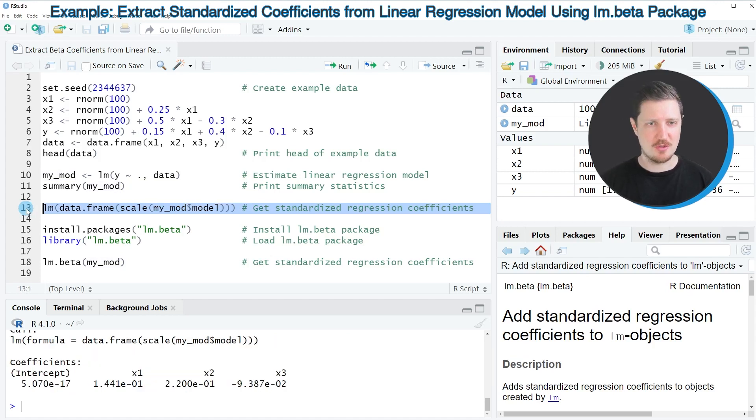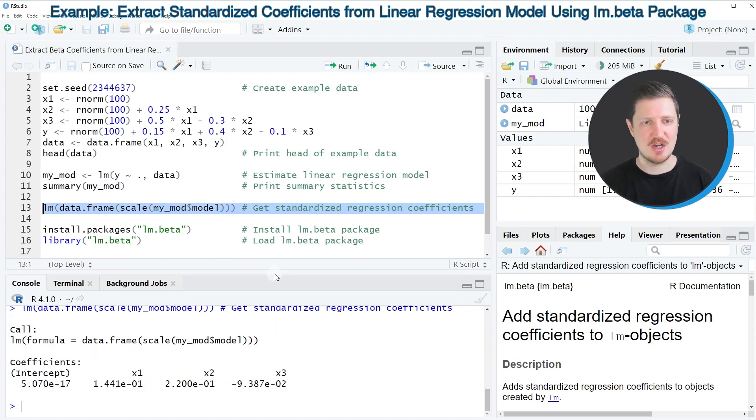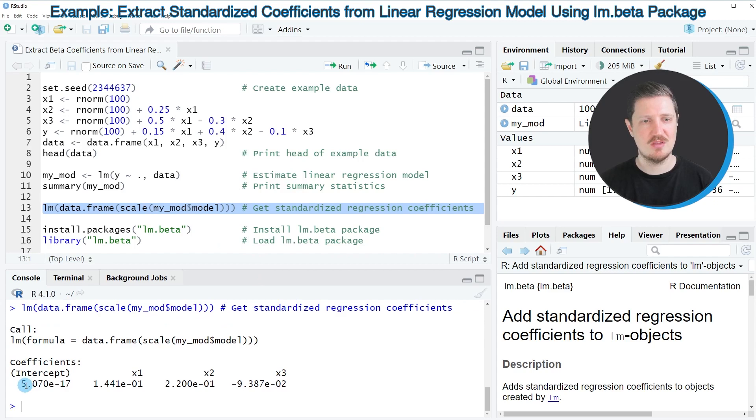So after running line 13 of the code you can see another output is appearing at the bottom in the RStudio console and this output is actually showing the beta coefficients that correspond to our linear model. So alternatively to the code that I have explained in the first example,